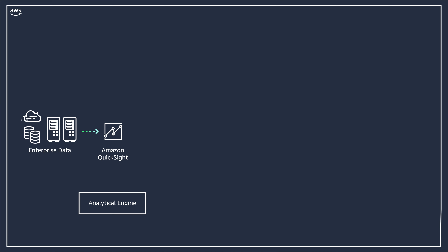Amazon QuickSight is a cloud-scale BI service that you can use to deliver easy-to-understand insights to the people you work with, wherever they are. QuickSight can include AWS data, third-party data, big data, spreadsheet data, SaaS data, B2B data, and more. Supported data sources in QuickSight include Amazon S3, Amazon Redshift, and SaaS products like Snowflake and Teradata. These data sources can be secured behind a private subnet, and QuickSight can connect in a secure mechanism using strategies such as VPC endpoints and secure firewalls.